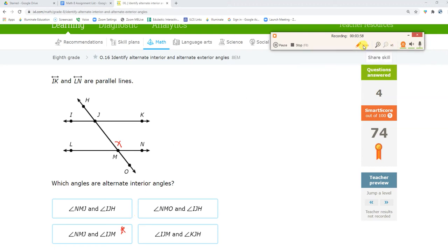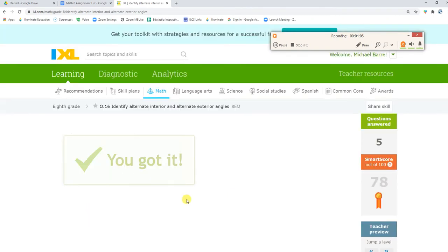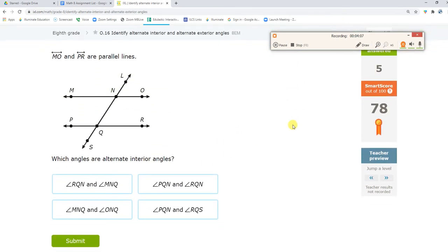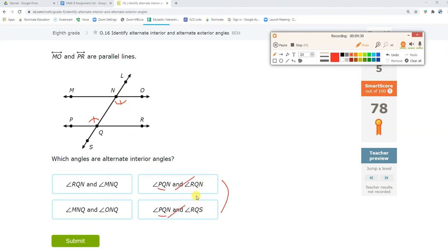Okay, angle PQN. I'm going to try these first, just because they have the same PQN. This one would be angle ONQ. Nope. Okay, so it's not those.